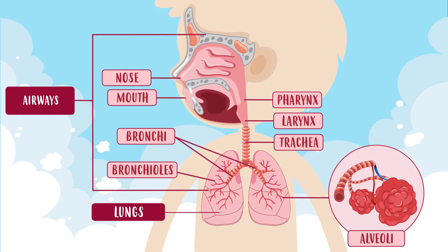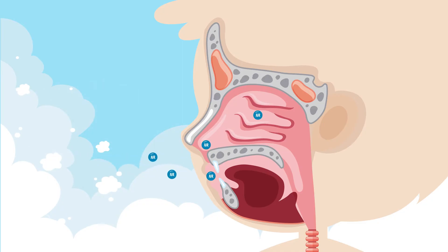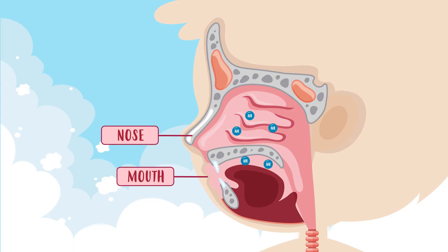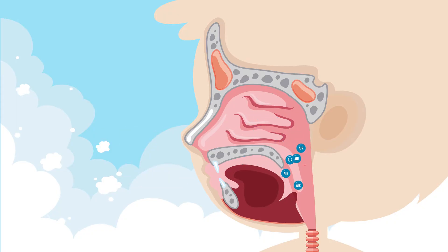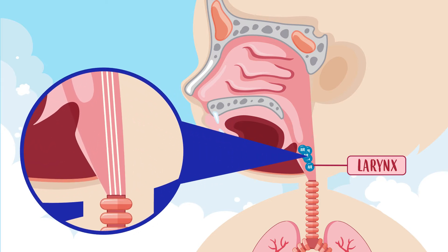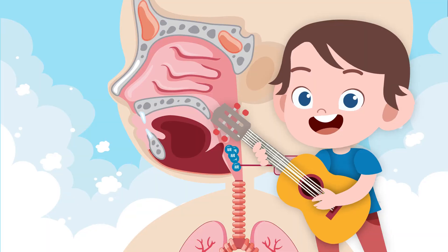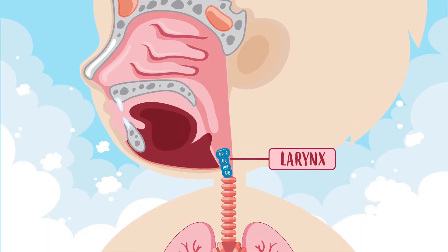Now let's take a look at how the respiratory system works. When we breathe in, air enters our body through our nose and mouth. The air then passes through the pharynx and into the larynx. Did you know that the larynx contains the vocal cords, which allow us to speak or sing? They are like the strings of a guitar — when they vibrate, they produce the voice.